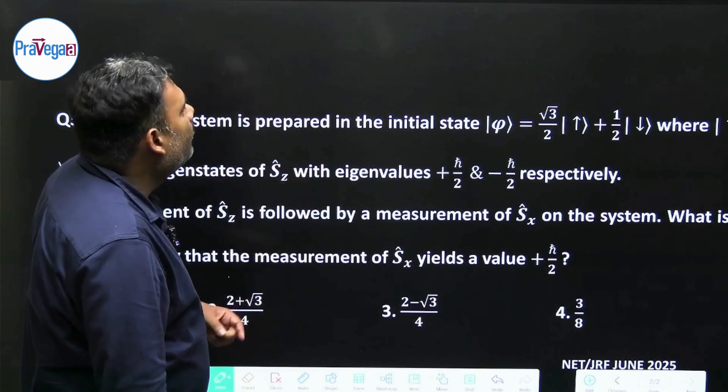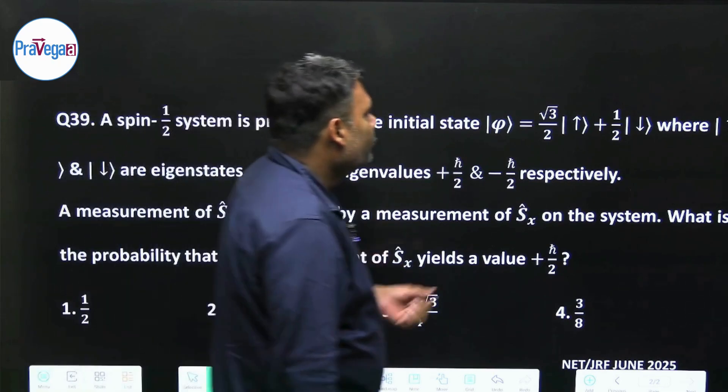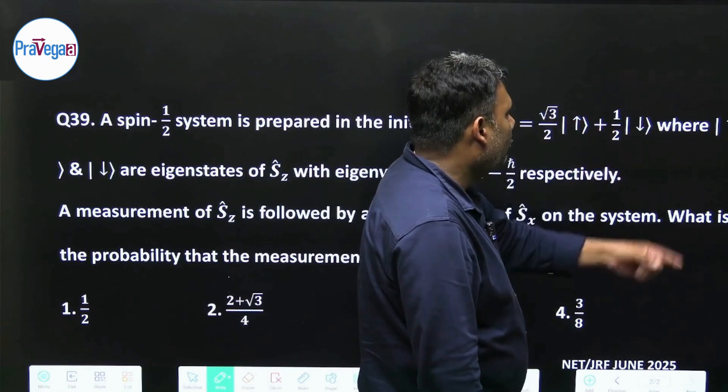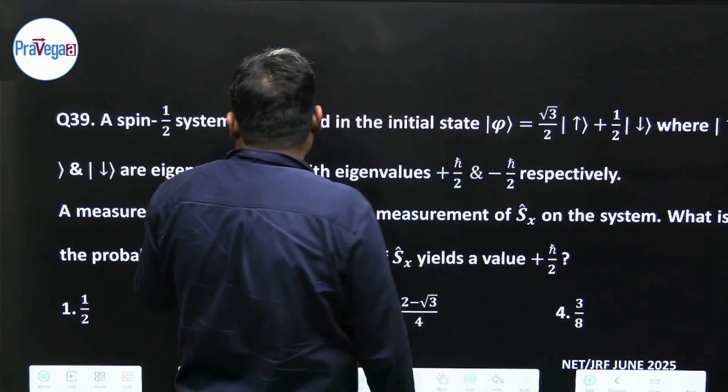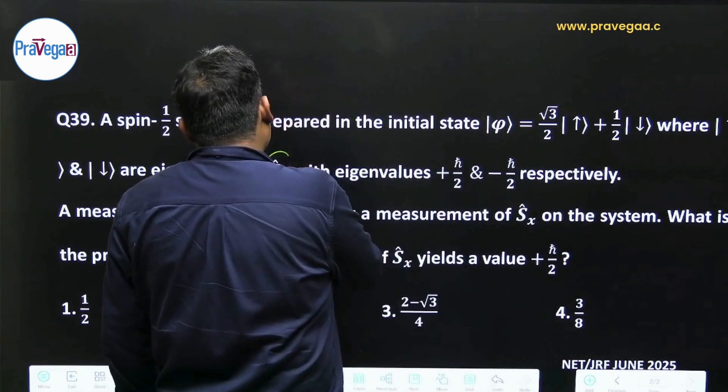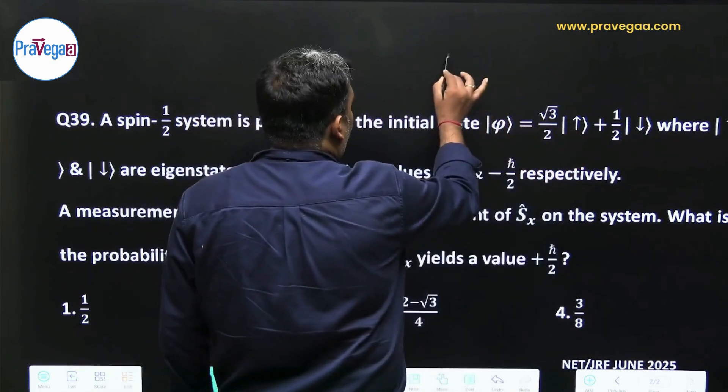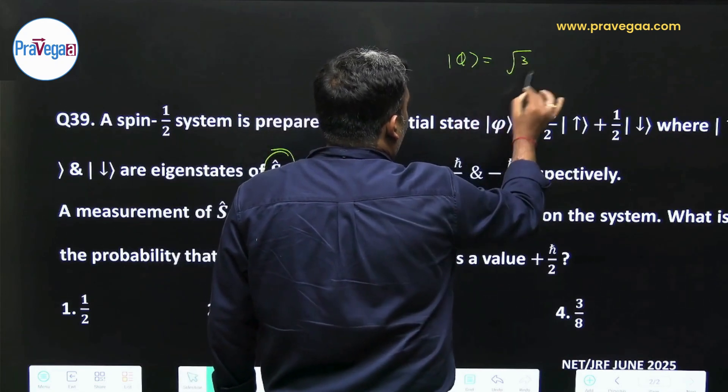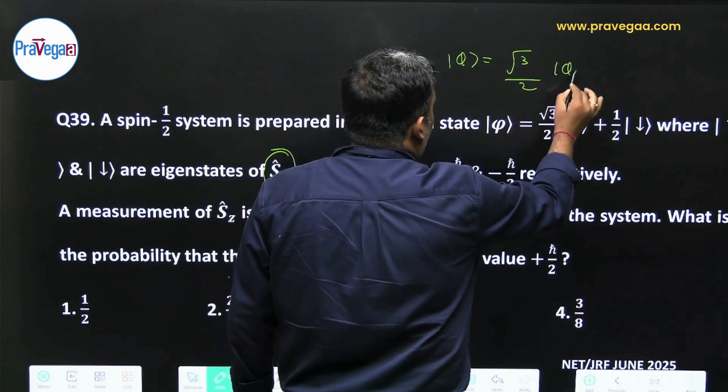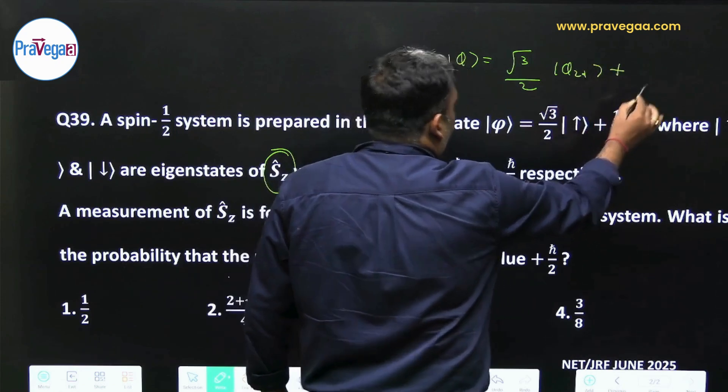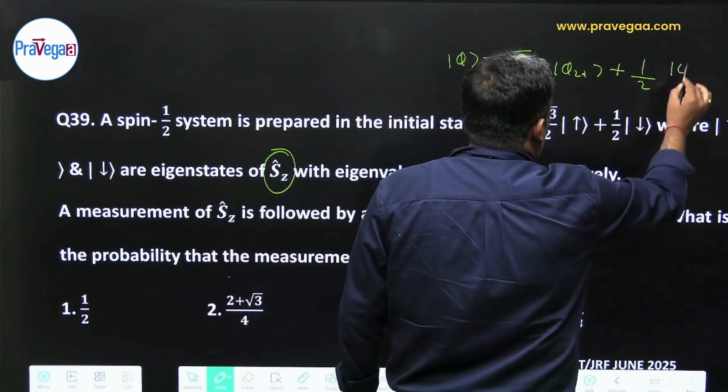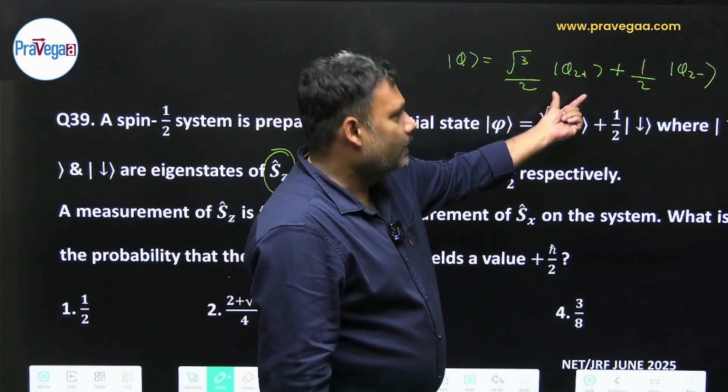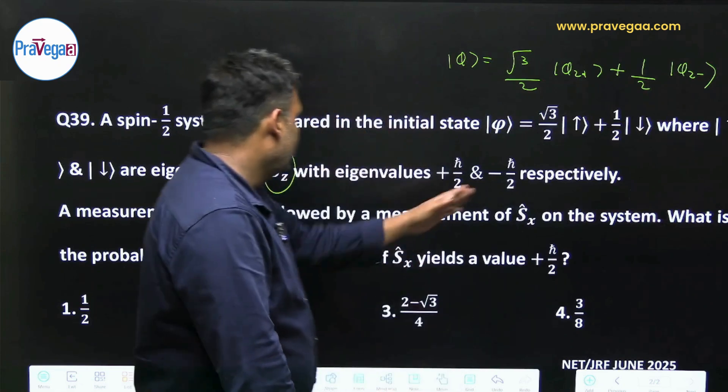A spin-½ system is prepared in the initial state φ = √3/2 in up state and 1/2 in down state, where up and down state are eigenstates of Sz. For clarity you can write this: φ = √3/2 φz+ plus 1/2 φz-. The eigenvalue corresponding to φz+ is ℏ/2 and minus ℏ/2. This is given.